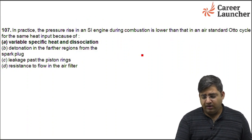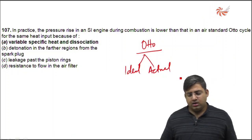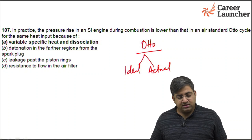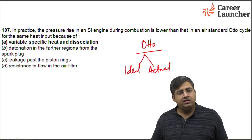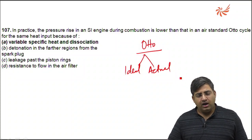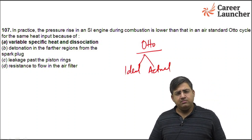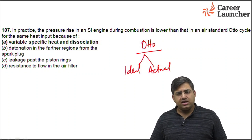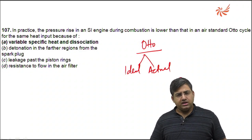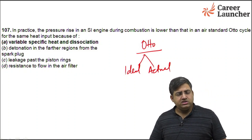The next question is about the Otto cycle. The pressure rise in an SI engine during combustion is lower than that in an air-standard Otto cycle for the same heat input. This is due to variable specific heat and dissociation. These are the main causes why the pressure rise in the actual Otto cycle is less than the ideal Otto cycle.